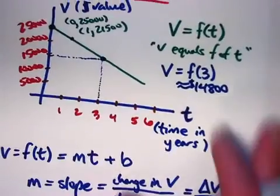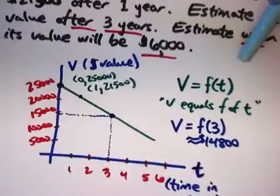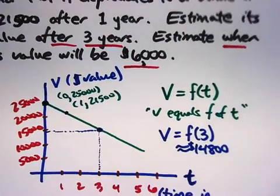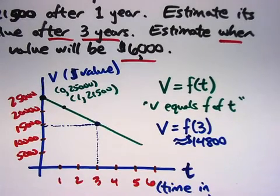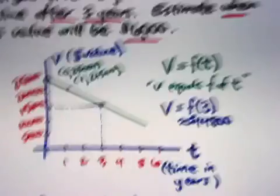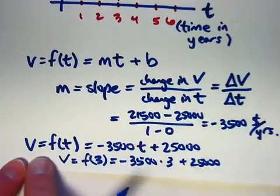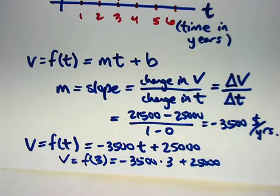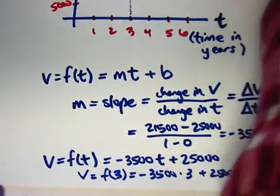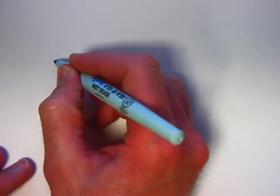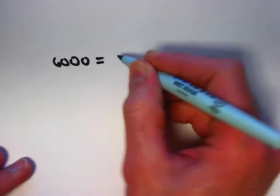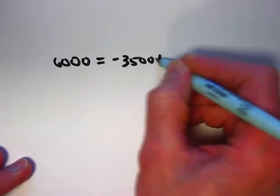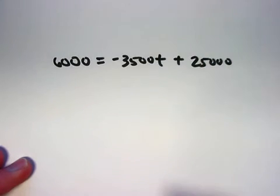What about the other question? Estimate when its value will equal $6,000. There we're trying to find time. t is unknown and V is known. It's just a matter of algebra. Use the formula down here. Replace V with 6,000 and solve for t. Do some algebra to solve for t. And I'll do that now. Pretty quickly here. You might want to stop the video actually and see if you can do it on your own. If you're back, great.